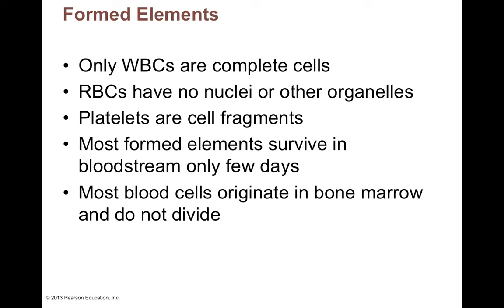Most of these formed elements only survive in the bloodstream for several days — platelets, several days; leukocytes also many of those only several days. The longest-living formed element is red blood cells, which can last about 90 to 120 days on average — about three or four months. These blood cells originate from bone marrow and don't divide once formed. All formed elements come from bone marrow cells called hemocytoblasts, which are stem cells that can give rise to any blood cell.